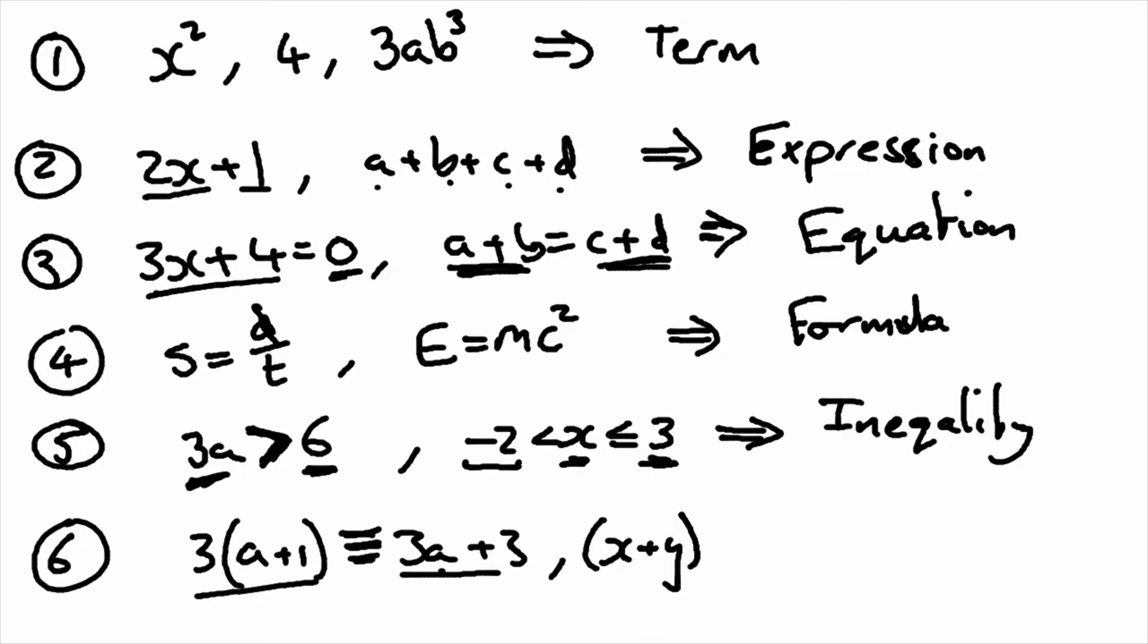x plus y times x minus y is always equal to x squared minus y squared. This is called an identity.